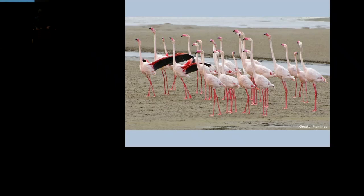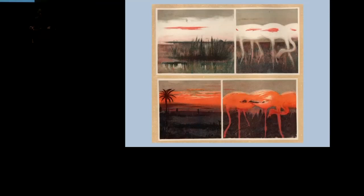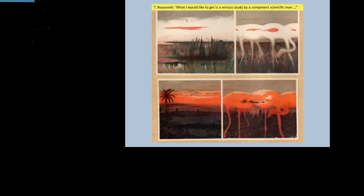But where he took a wrong turn was trying to paint flamingos. Now, flamingos, this is Walvis Bay Lagoon, they're very colorful, very large, and pretty hard to hide. But Thayer managed to make them disappear into the sunset and the sunrise. It made him a bit of a laughingstock. And even by then the ex-president of the US got involved and suggested a serious scientist look at this.